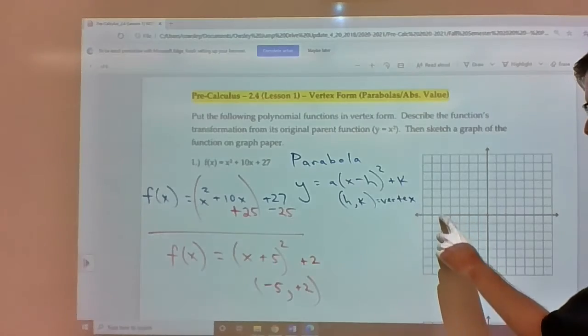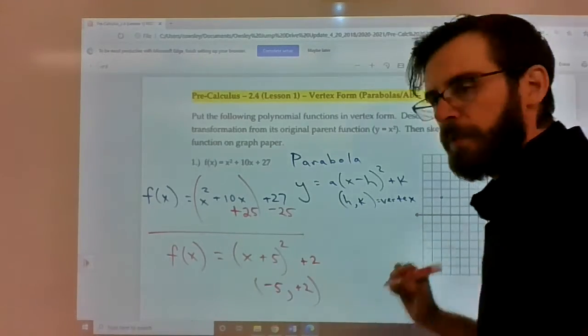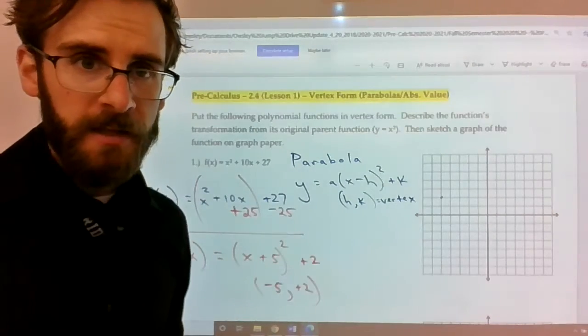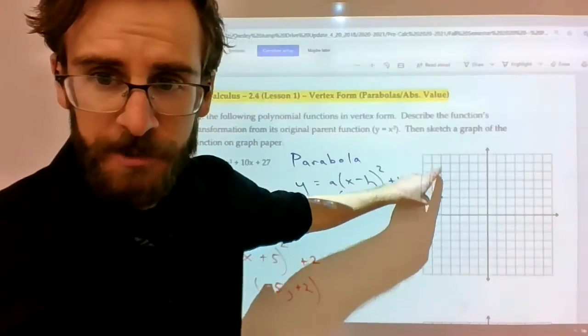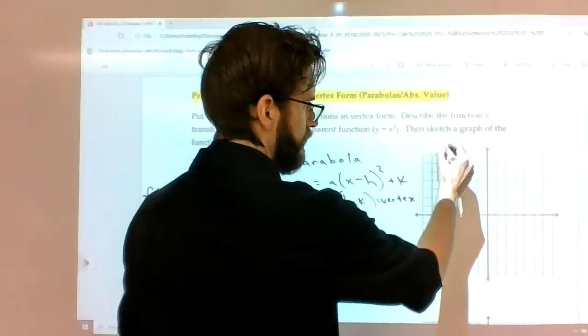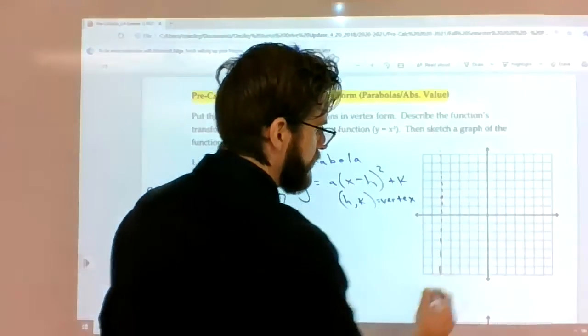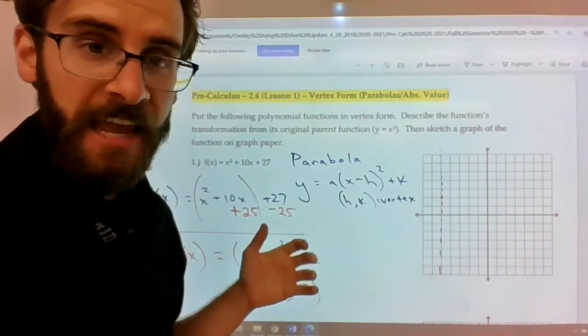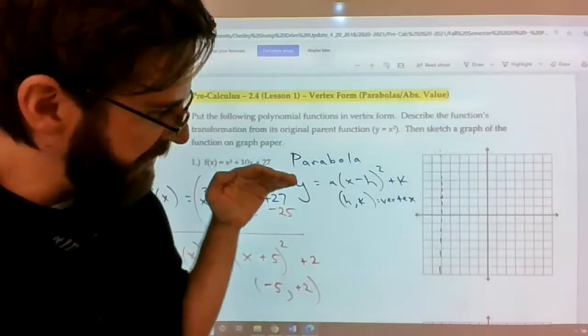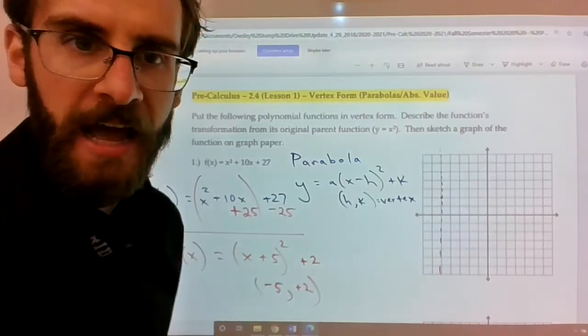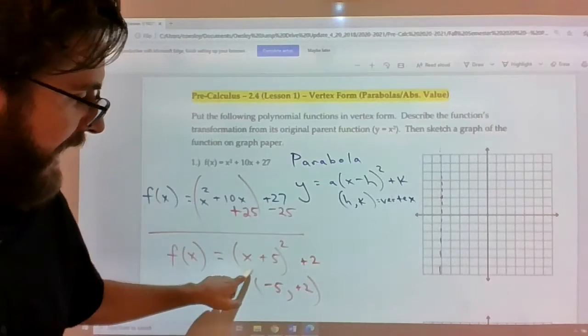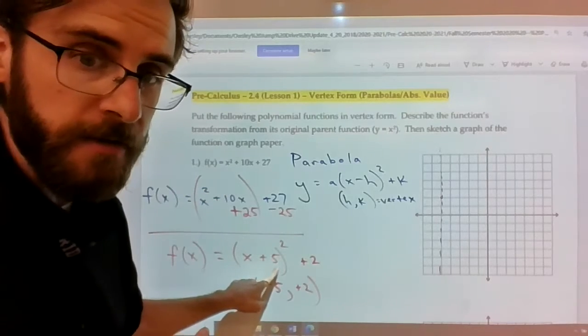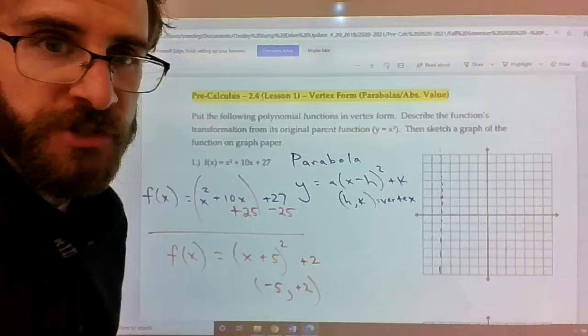And what it tells us is that we have a negative 5, positive 2 vertex. So at left 1, 2, 3, 4, 5, up 1, 2, we've got the first point on the parabola. The first point on the parabola now is going to tell us what the axis of symmetry is. So what I do now is I plug in numbers to both the right and the left of that axis, and they should give me symmetrical points. They should be sort of like the same y value up or down from where you plot them. So if I plugged in negative 4, for instance, negative 4 plus 5, 1, square it, still 1, 1 plus 2, 3.